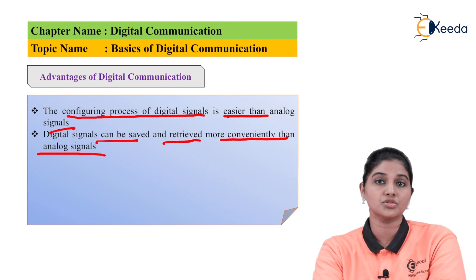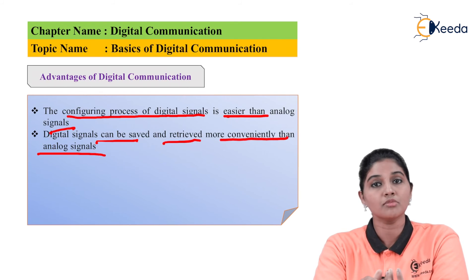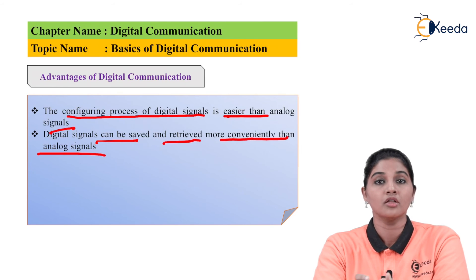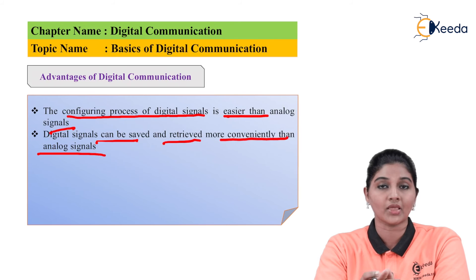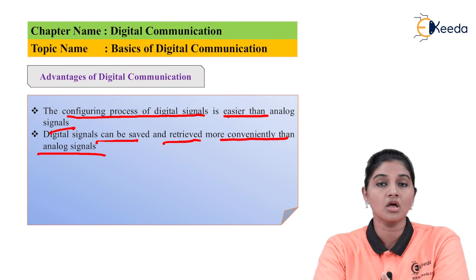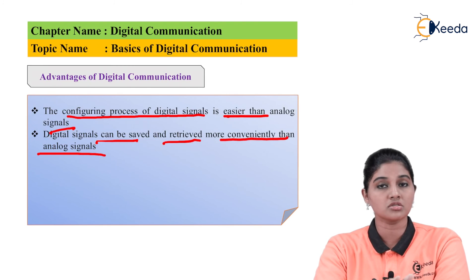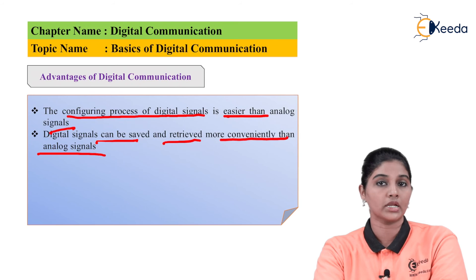Analog values change continuously with respect to time, making it very difficult to store, process, and use them for future use. This is not the case with digital signals — digital signals do not vary with respect to time, so they are very easy to store. We can use them for future use and retrieve the original information back from them. From a storage, processing, and information-retrieval point of view, digital systems are more convenient than analog systems.